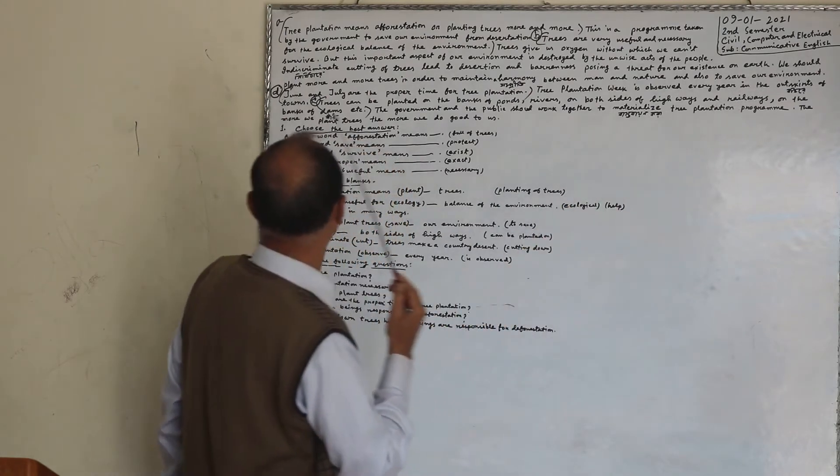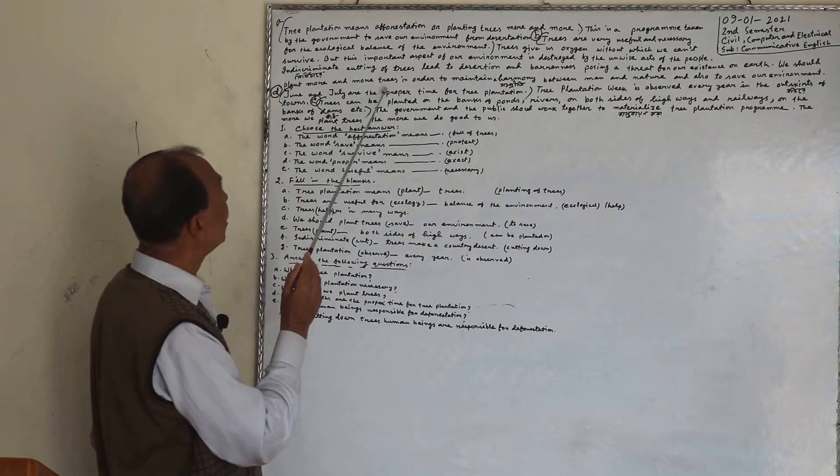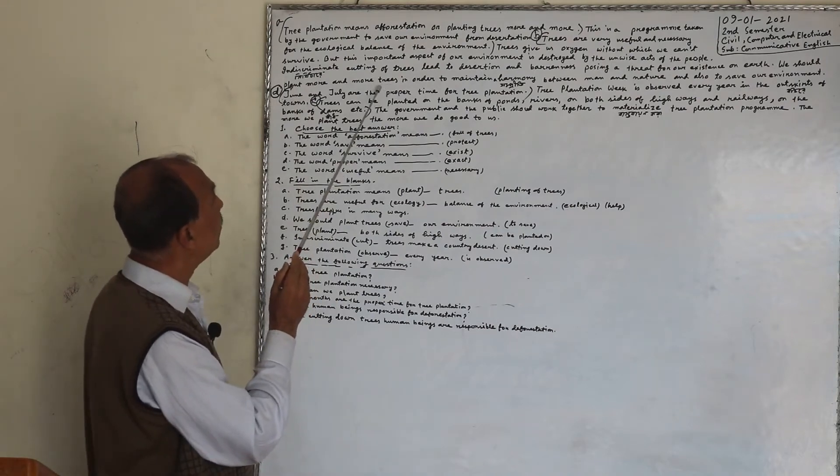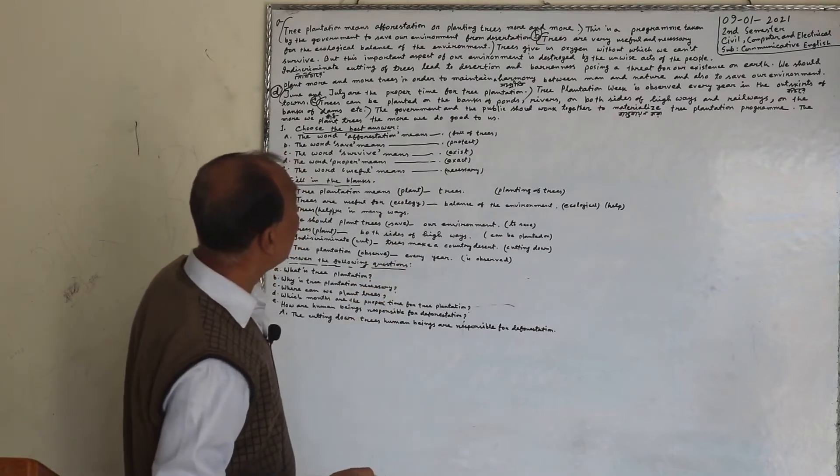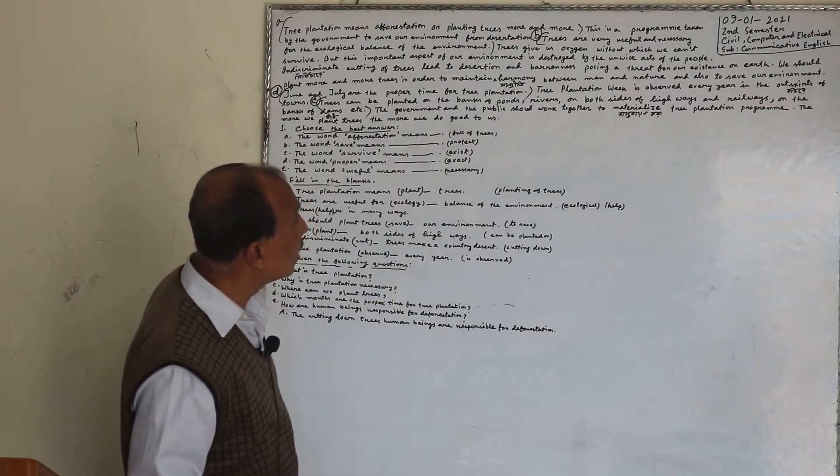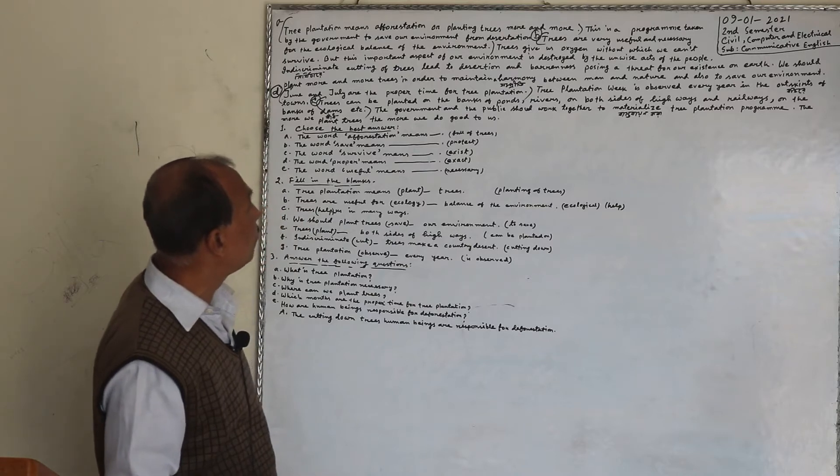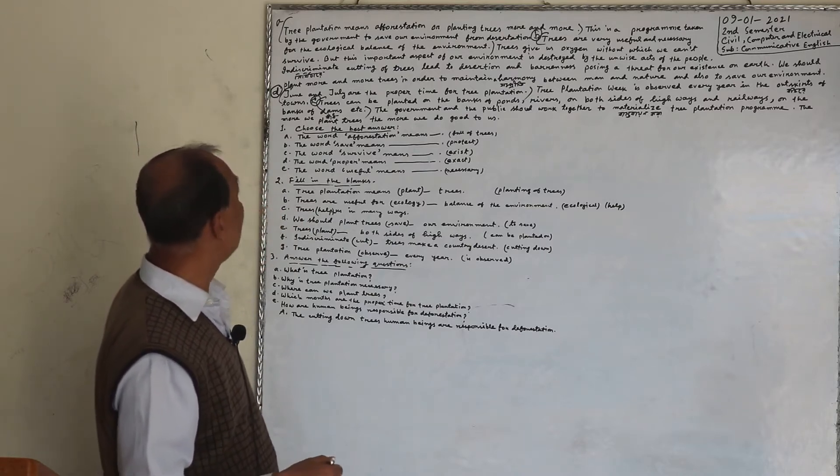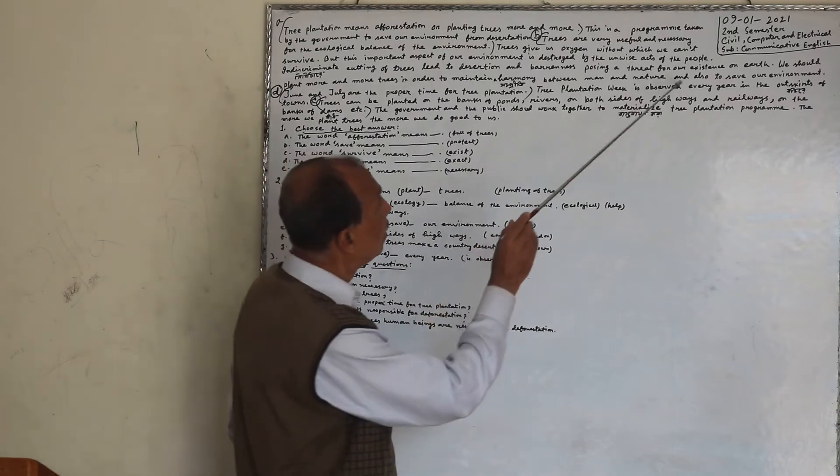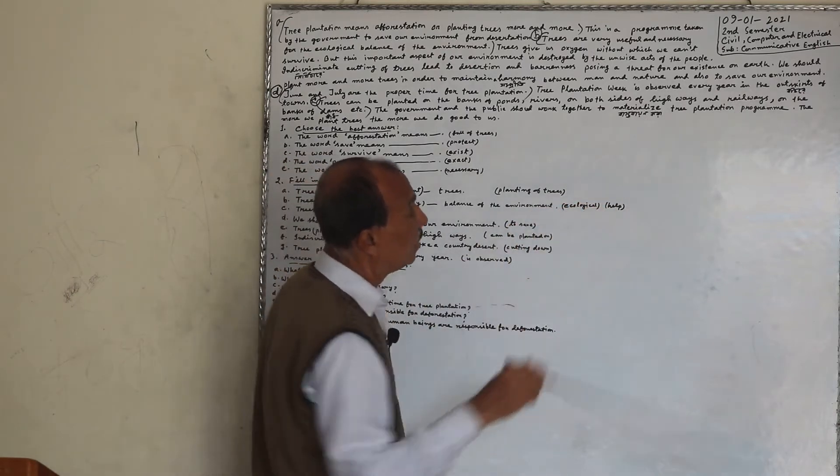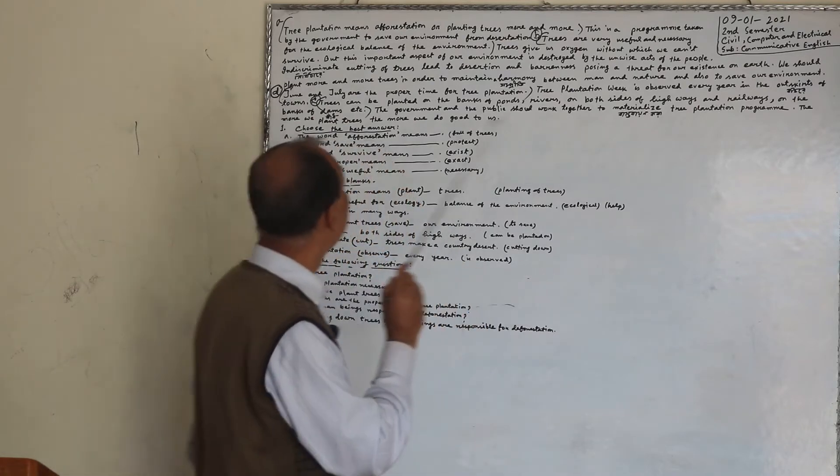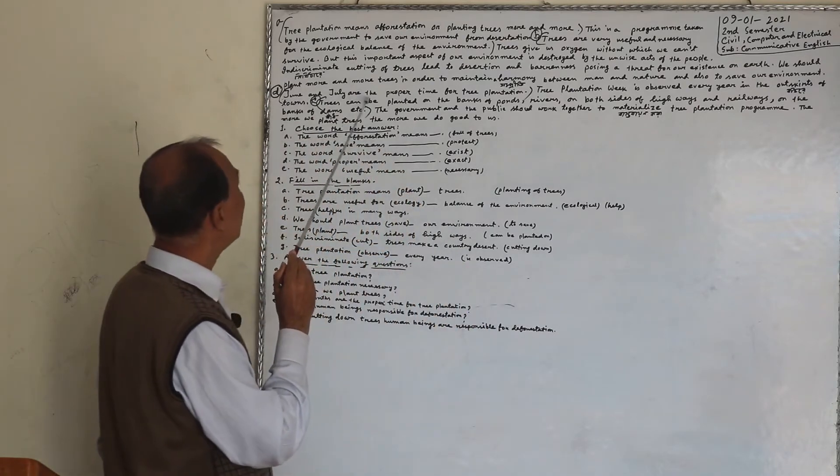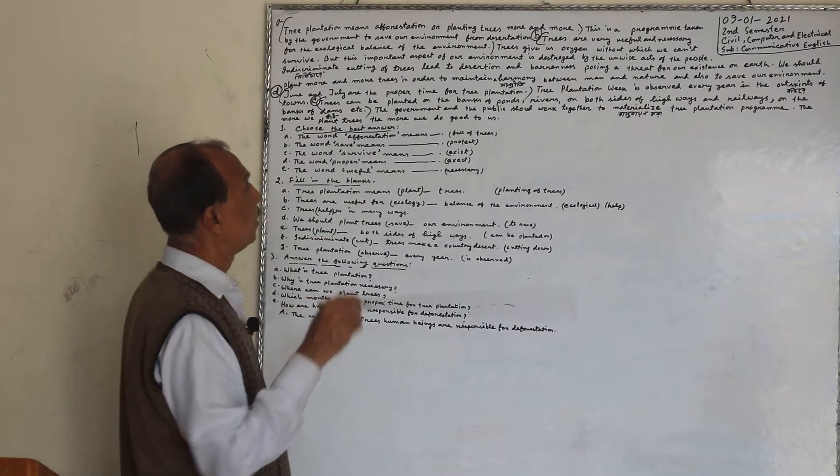We should plant more and more trees in order to maintain a harmony between man and nature and also to save our environment. June and July are the proper time for tree plantation.